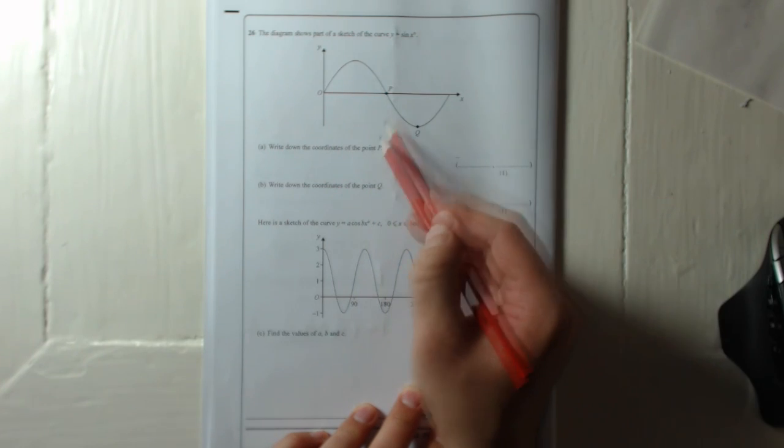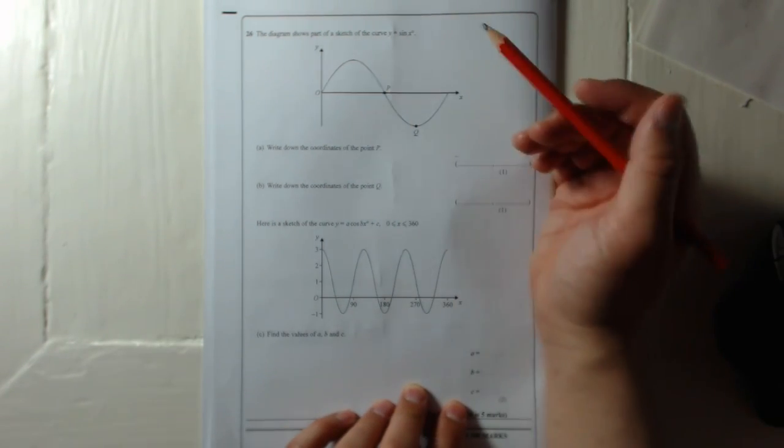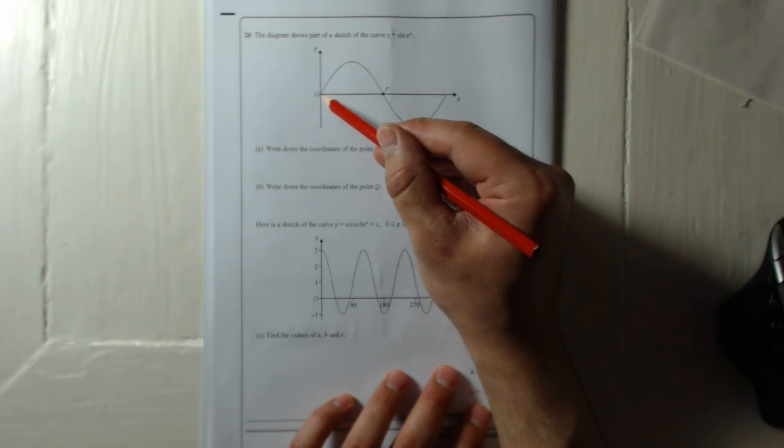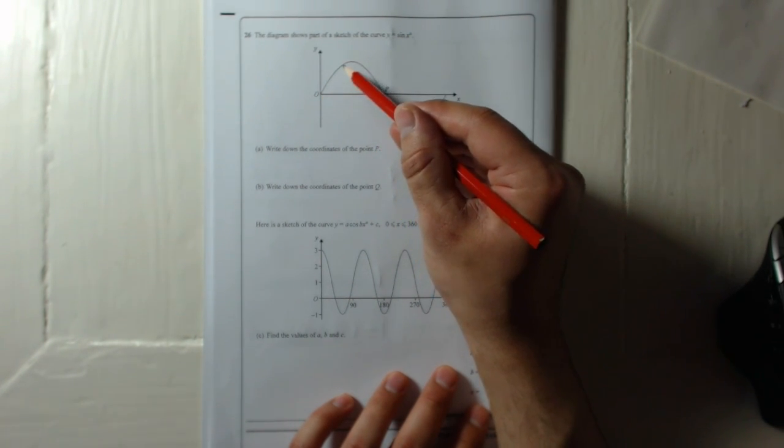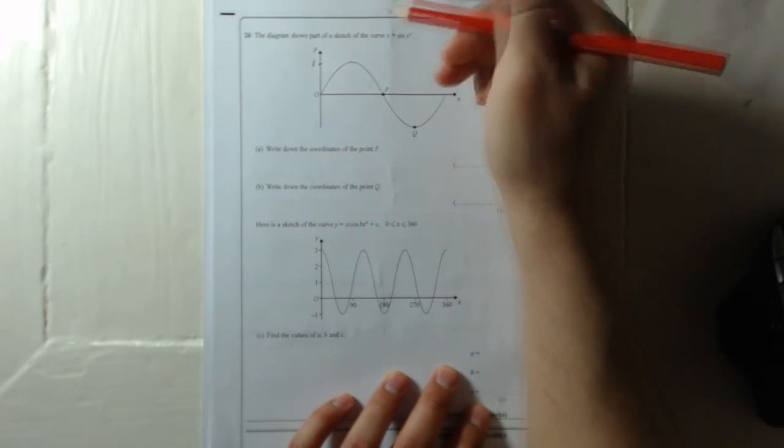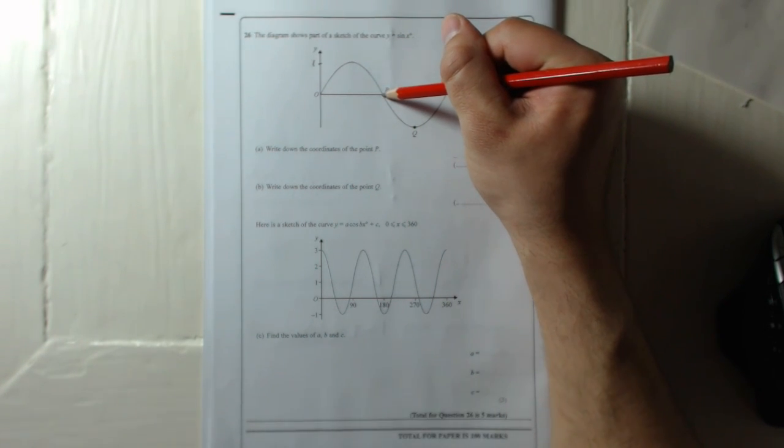Write down the coordinates of the point P. Now a few things to know about sine curves is that the y equals sine x curve always starts at 0,0. It goes up and reaches 1, then gets down—halfway through it gets down to 0,0 again.